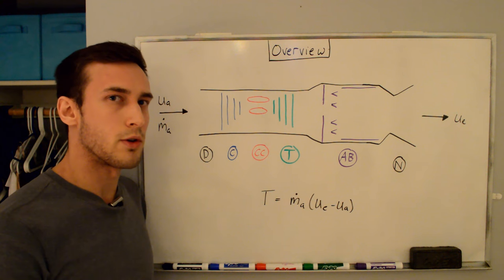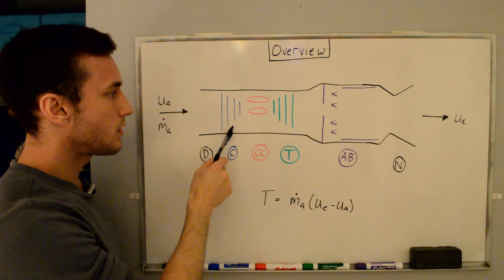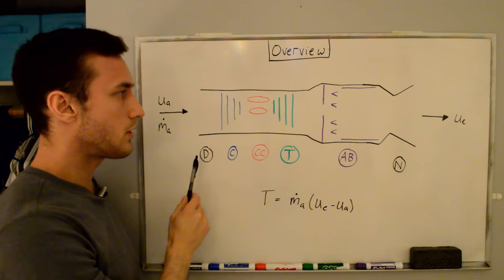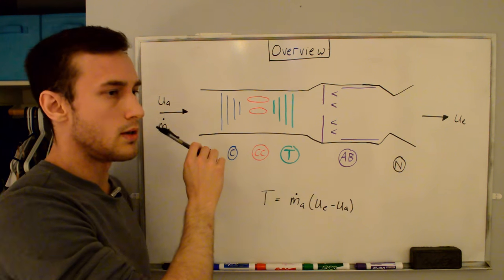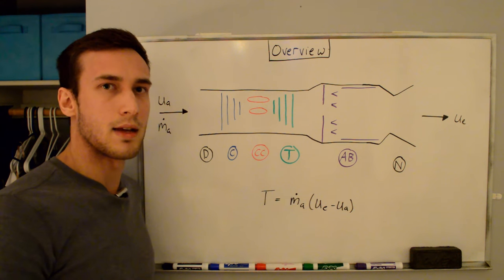In general terms, let's see what an afterburner actually does. So take a look at this engine here. First we take in some air, pass it through a compressor, add some fuel and ignite it, extract enough energy from the turbine to power the compressor. And then with the leftover energy, we turn it into kinetic energy to spit out the back at a certain velocity, UE, and that gives us our thrust.